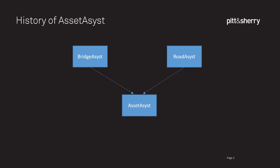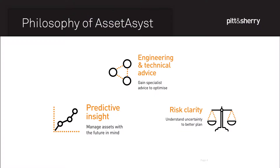For a little bit of history, the software was birthed out of two separate software products — BridgeAssist and RoadAssist — and over time they merged together to become AssetAssist as we know it today. The philosophy behind the software can be best described by these three icons from our branding: engineering and technical advice, predictive insight, and risk clarity.